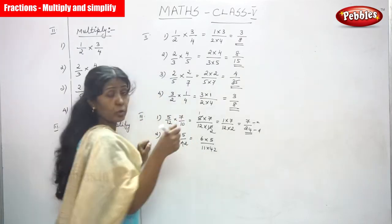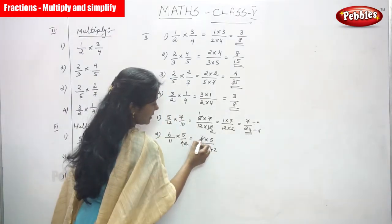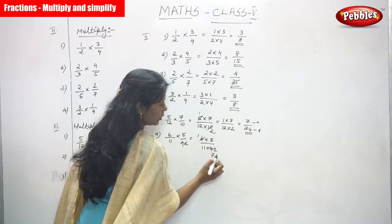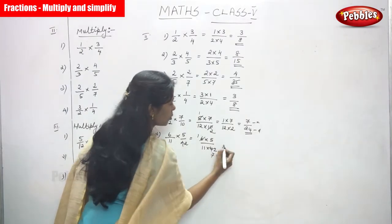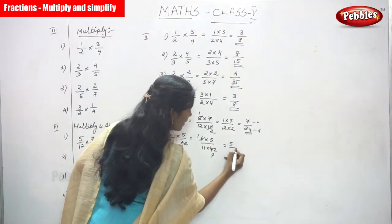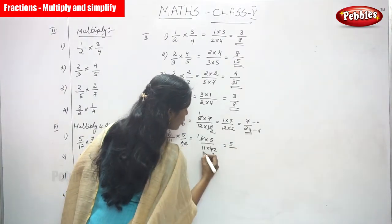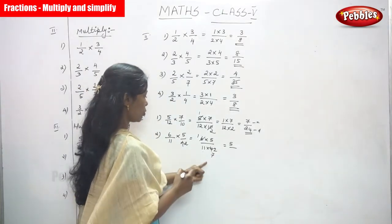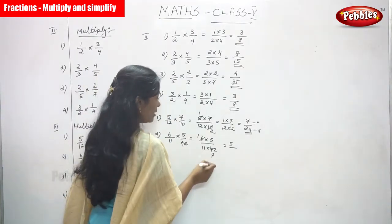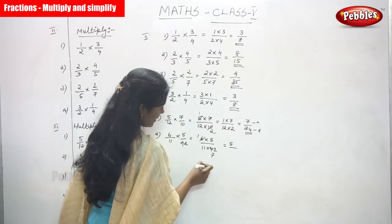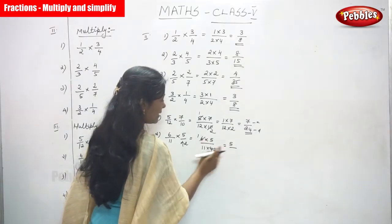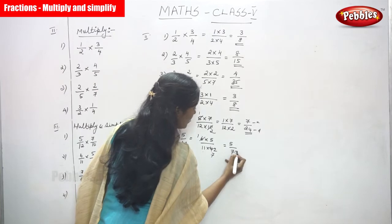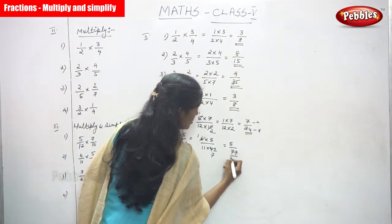You can cross-cancel the numbers. 6 and 42 share a factor of 6: 6 ÷ 6 = 1 and 42 ÷ 6 = 7. So we get 1 × 5 divided by 11 × 7. That gives us 5 in the numerator and 11 × 7 = 77 in the denominator.